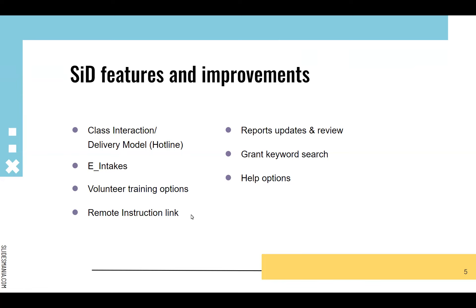We have something new called the remote instruction link, which we added a while ago but kind of slipped through the cracks. We have a few newer reports and some updates to older reports, as well as some reports that slipped through the cracks. A few things are especially relevant this year now that we seem to be entering back into a world more similar to pre-COVID. Grant keyword search is a way of filtering reports that we occasionally get questions about, and then some of our help options.